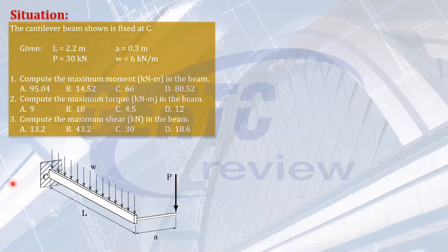So the maximum moment is at point C. That will be for the w: 6 times the length of the beam 2.2 meters times one half of 2.2, which is 1.1. So 6 times 2.2 times 1.1, plus your P times L: P = 30 times L = 2.2.